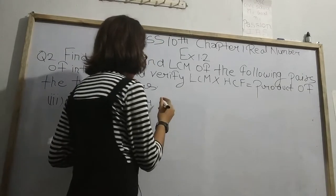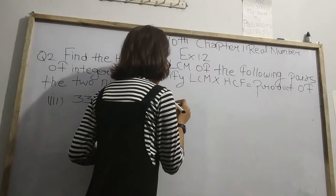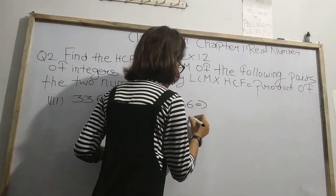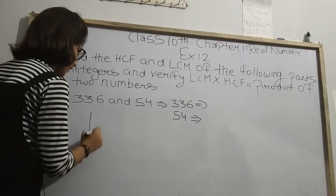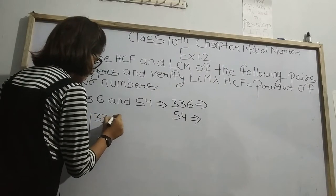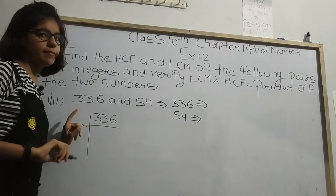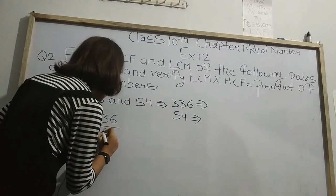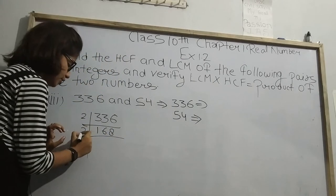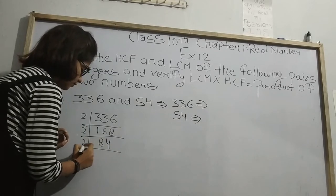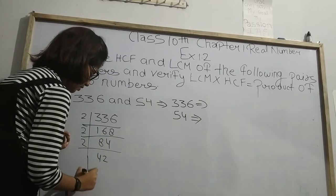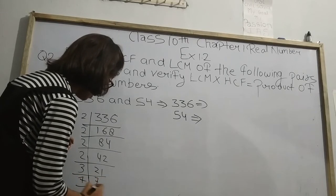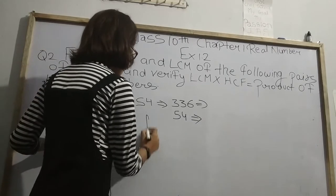To find the HCF we need the prime factorization. For 336: it is divisible by 2 — 336 ÷ 2 = 168, again by 2 = 84, again by 2 = 42, again by 2 = 21. Now 21 is divisible by 3 giving 7, and finally 7 ones are 7. Our next number is 54.